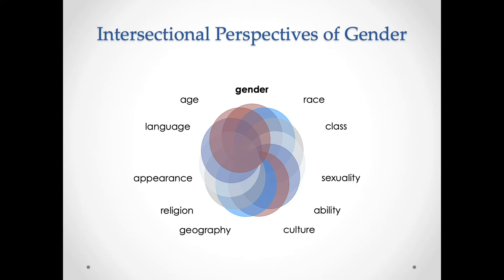We could say the same thing not just about gender but about every category. If we take working class people, we should quickly realize that working class people are more different from one another than they are, on average, different from middle class people. Why? Because working class people have different ages, different races, different sexualities, different genders — all of these other differences. Core here is to think about how it is that categories intersect or overlap with one another and produce considerable differences within the category.